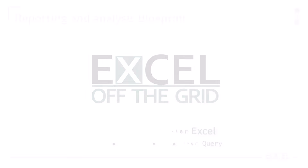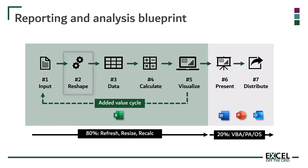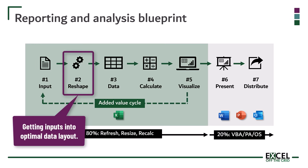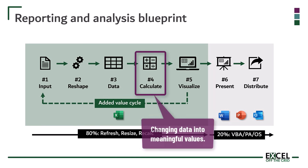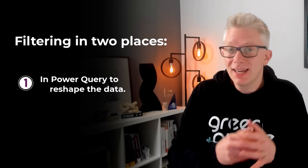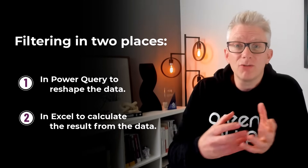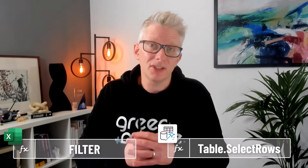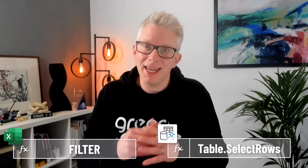In the blueprint we introduced a few weeks ago, we saw that step two was reshape — this is getting the inputs into the optimal data layout. We also saw that step four was calculate — this is about changing the data into something meaningful. That means we might filter in two places: first inside Power Query to get the data into the right shape, and second using a formula to get the results that we want to see. The function inside Excel is FILTER, and the function inside Power Query is Table.SelectRows, and these two functions actually work in the same way.